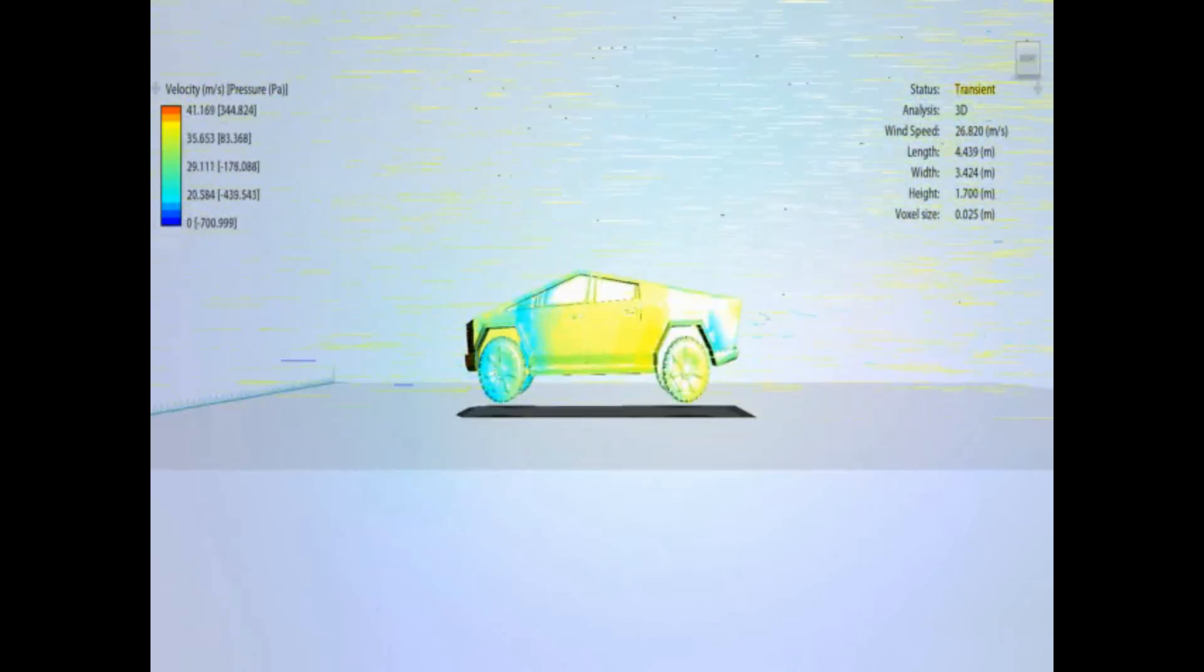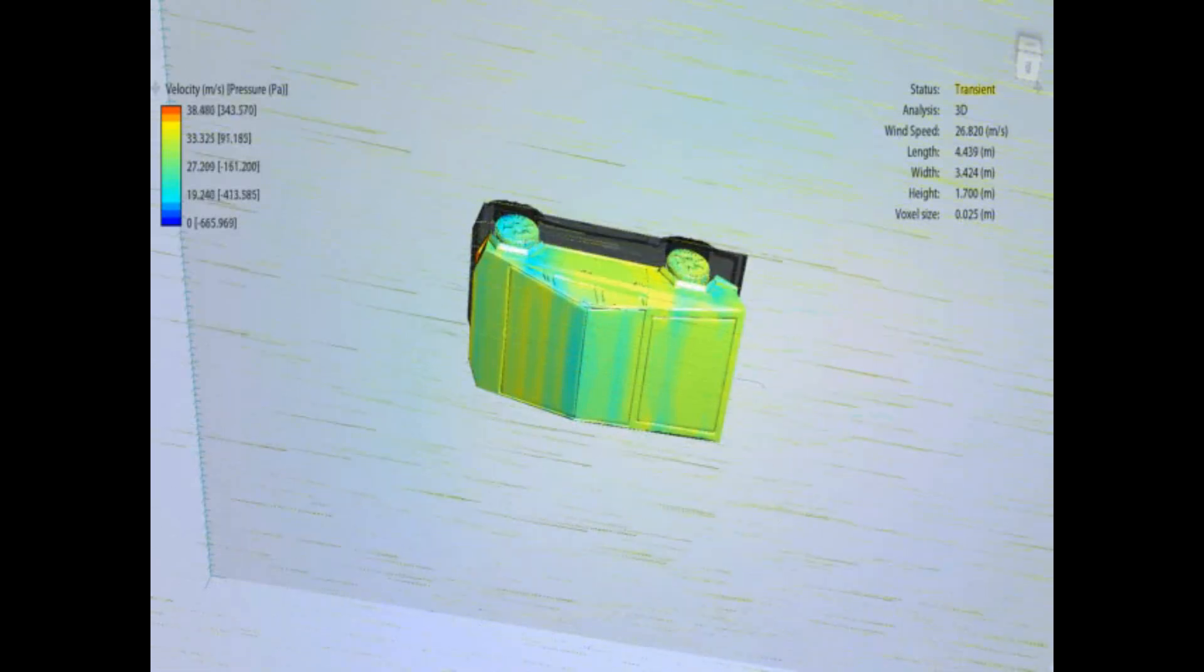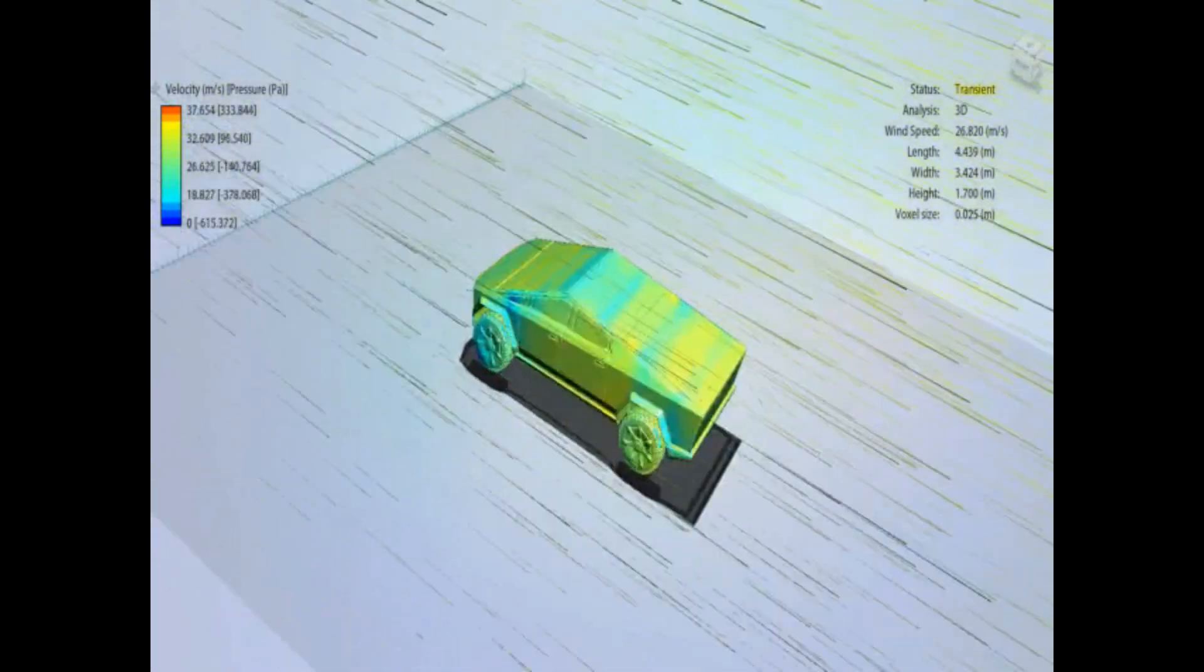Again, at higher speed, you can see the pressure on the front of the truck. And this is showing surface pressure over the bodywork.